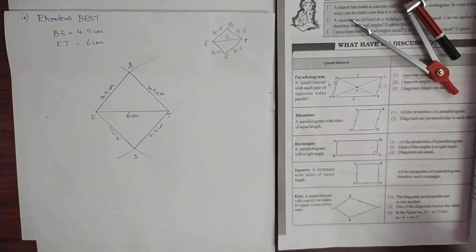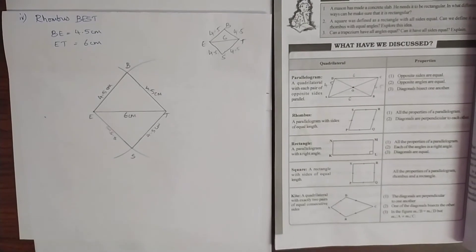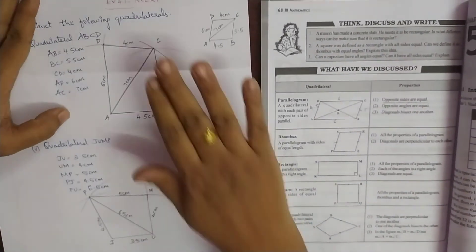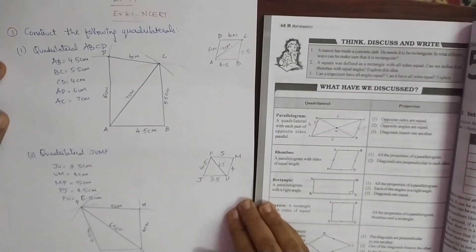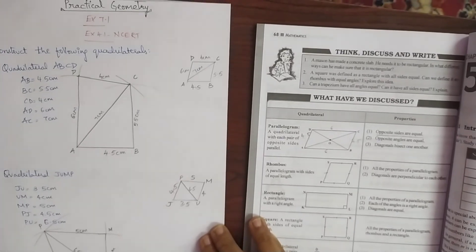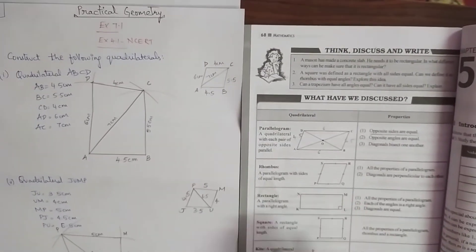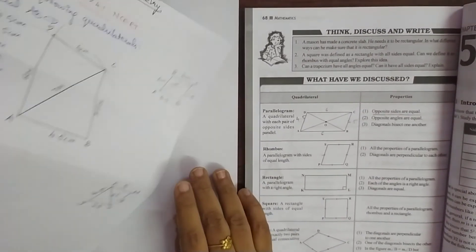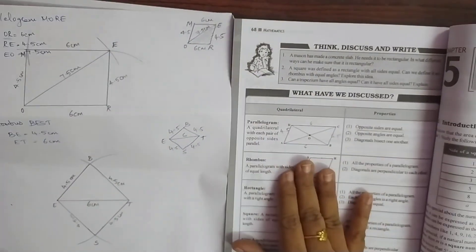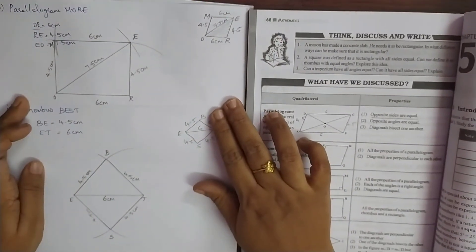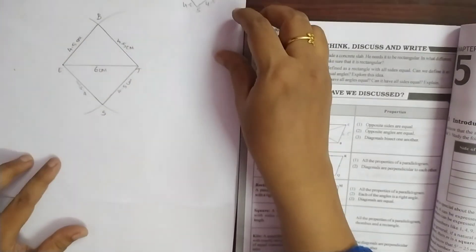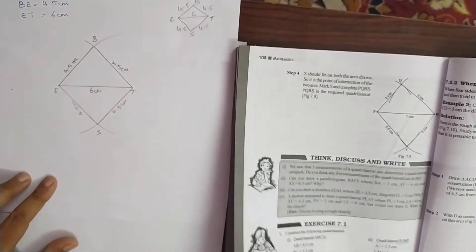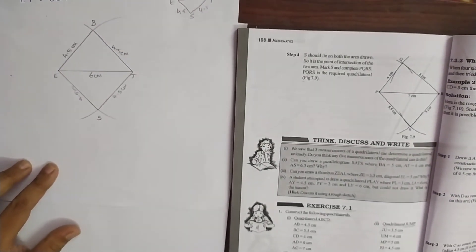I hope you have understood, children. We have completed the exercise. First, we constructed quadrilateral ABCD. Second, we constructed quadrilateral JUMP. Third, we constructed parallelogram MORE. And fourth, we constructed rhombus BEST. I hope this is clear to you. Hope you have learnt how to construct from this video, children. Thank you and have a nice day.